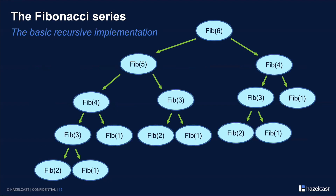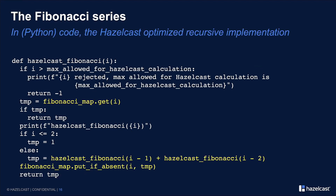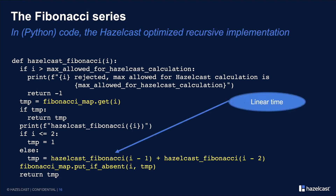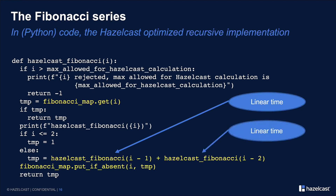This is what the calculation boils down to: to do the calculation for 6, you've got to do 5 and 4. Five requires you to do 4 again and 3; 4 requires you to do 3. So you end up repeating a lot of calculation work. Now we've swapped to Python. If we're using Hazelcast, we can just make a call to Hazelcast's Fibonacci map and say, do we have an answer for this input? If we do, that's done. If we don't, we make that same calculation call — but it's going to run in linear time because we're looking up stored answers.